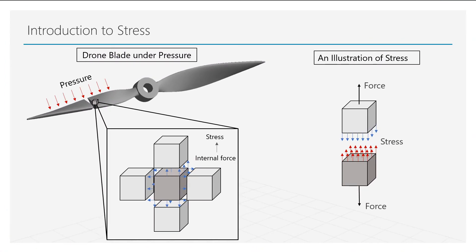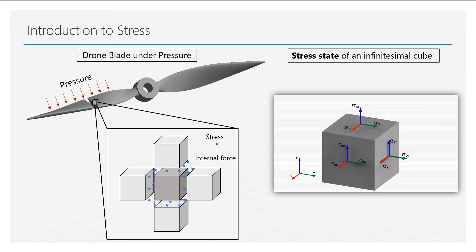Let's zoom in to one randomly picked particle from the domain. We can use an infinitesimal cube to represent it. The stress state of the particle is expressed by nine components spreading on three faces normal to the coordinate system.